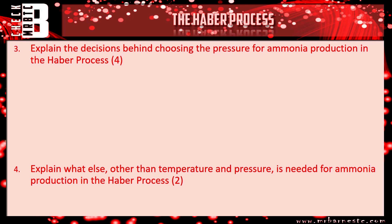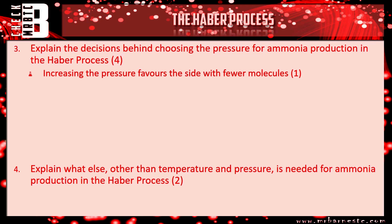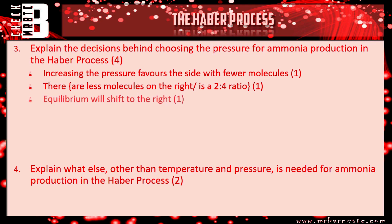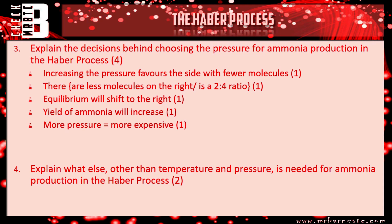Moving on to question three: explain the decisions behind choosing the pressure for ammonia production in the Haber process. Increasing the pressure favours the side with the fewer molecules, which in the Haber process is the right-hand side — our ammonia. There are two molecules on the right and four on the left. The equilibrium will shift to the right, giving a higher yield of ammonia.